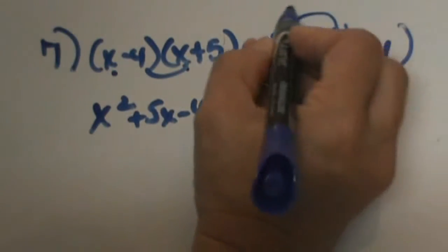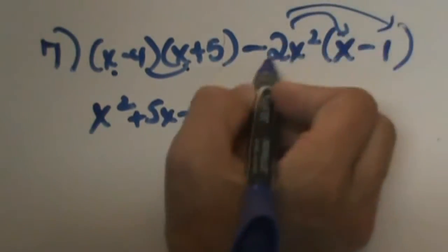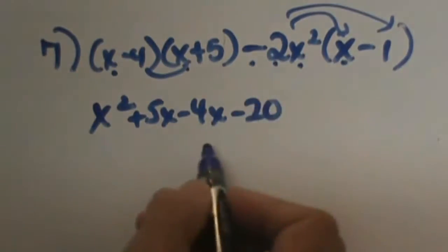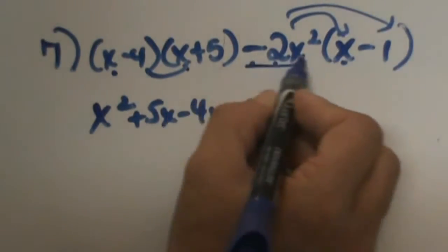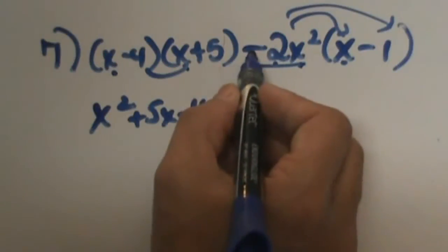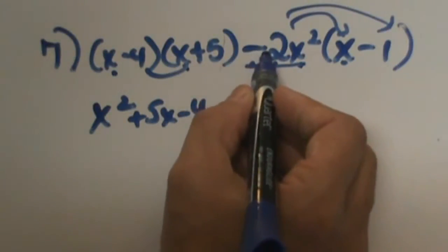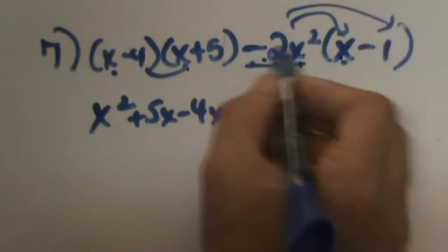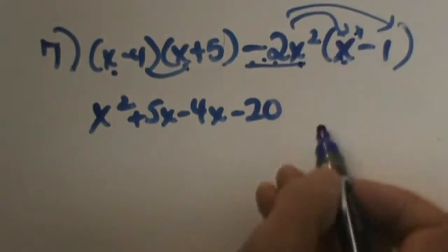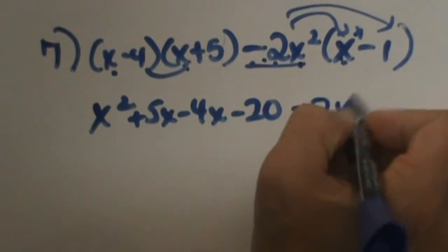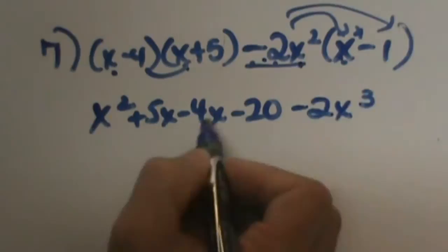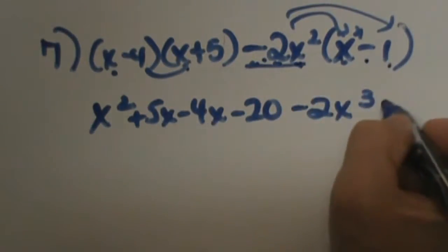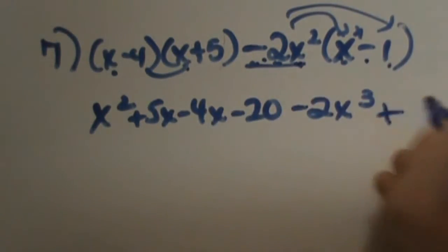Now I am going to distribute this negative 2x squared into x minus 1. Make sure you bring this negative with it — that sign is negative. So negative 2x squared times x: all we do is add the exponent of 1, so it is negative 2x cubed. Negative 2x squared times negative 1 — negative times a negative is a positive.